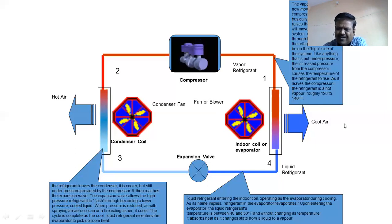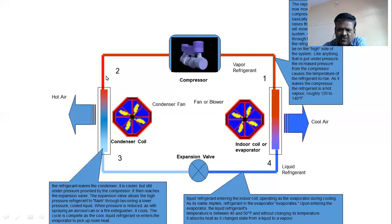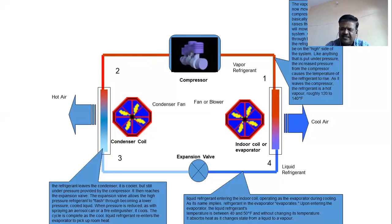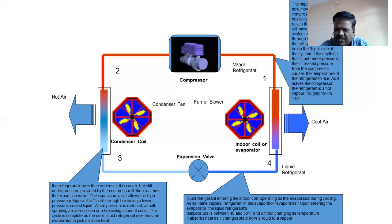This cold air can be circulated inside wherever you want — in a room or hall — by using a fan. This is the working principle of the air conditioning system. Whether it is a package AC, split AC, chiller, or whatever it may be, all these four elements will be there and the working principle of each and every element is the same.